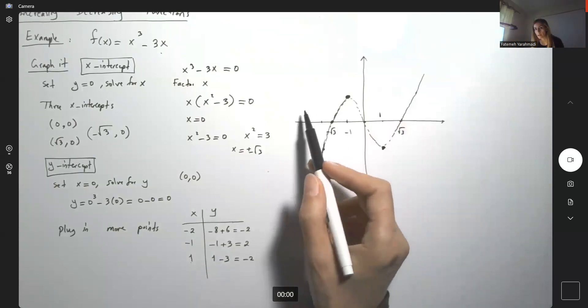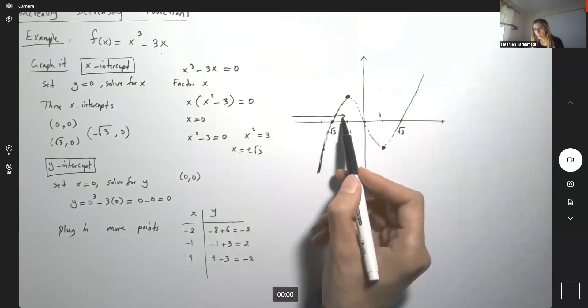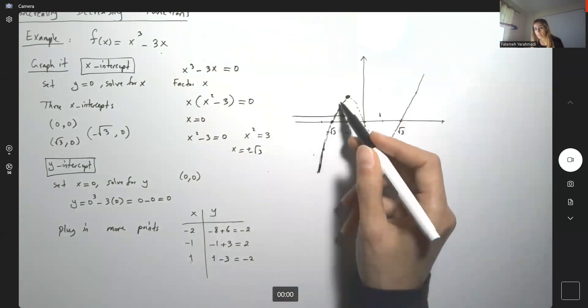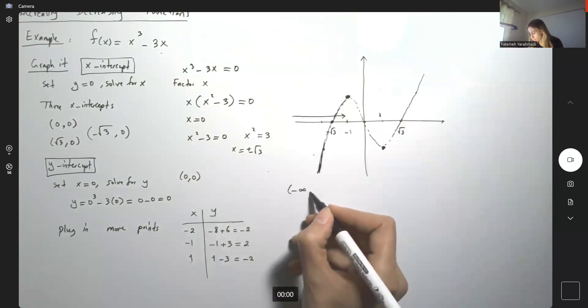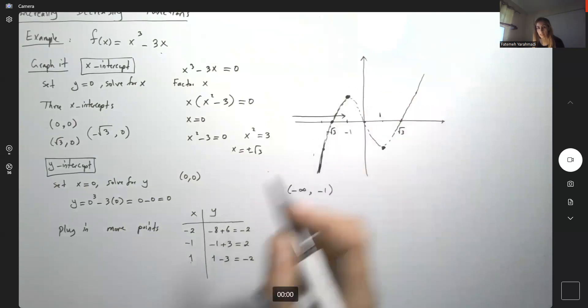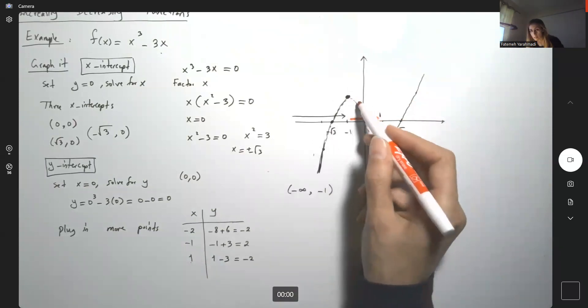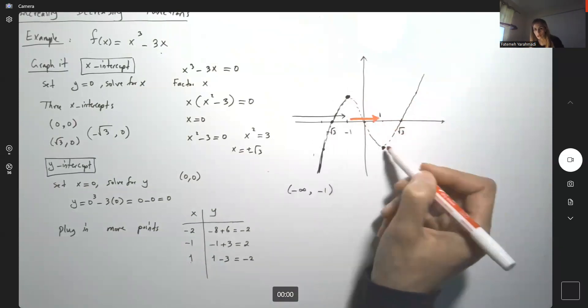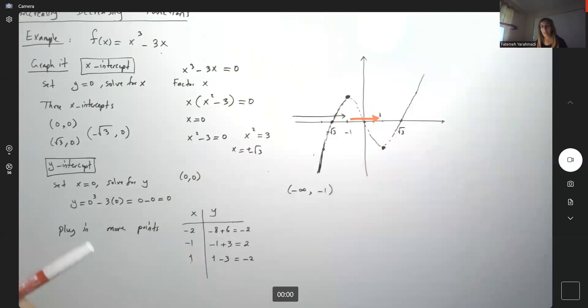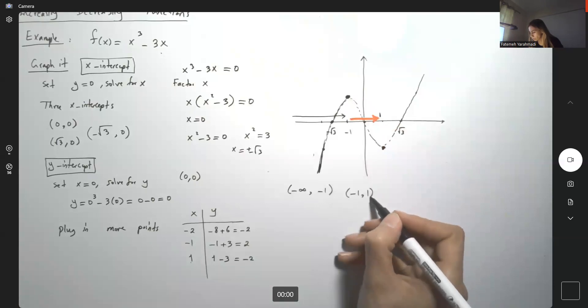From negative infinity to -1, you have an increasing function - the y values are increasing. From -1 to 1, my function is decreasing - the y values are decreasing. The function is represented by y values.